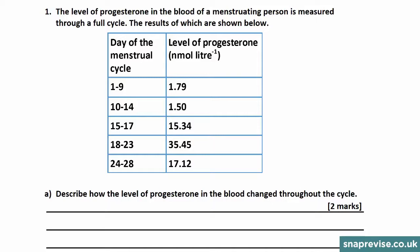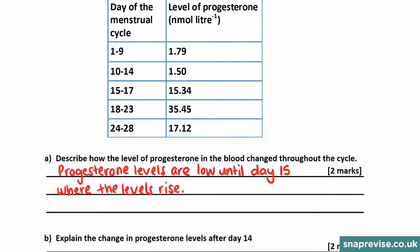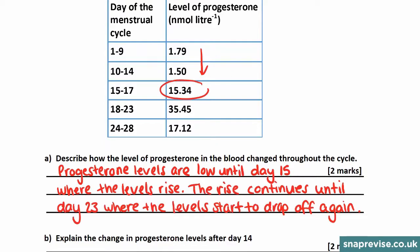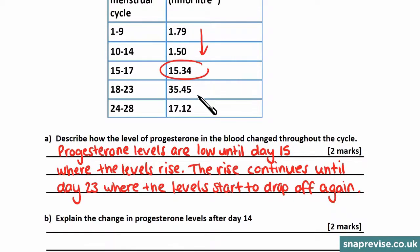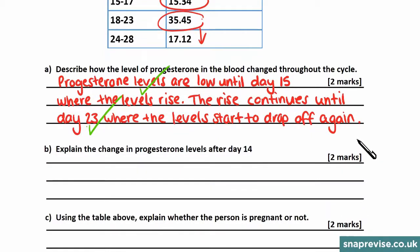This question is worth two marks, so you have to give two different points. The first point is that the levels of progesterone are low until day 15, and then the levels rise. The second point is that the rise continues until day 23, where the levels start to drop off again — the levels drop from 35 to 17. So you get a mark for stating progesterone levels are low and a mark for saying the rise continues until day 23.